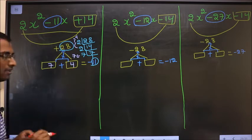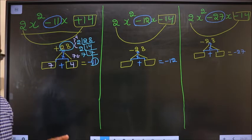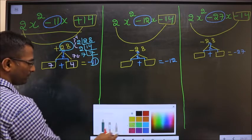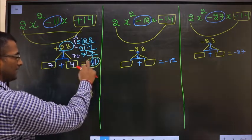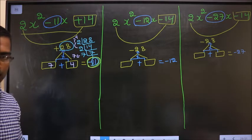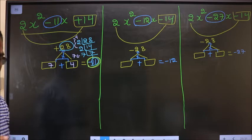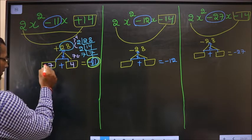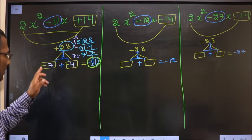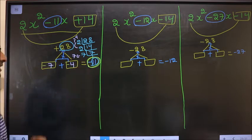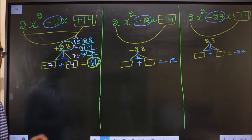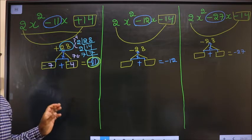Now adjust the signs for the first expression. We need the two numbers to sum to minus 11. That is only possible by placing a negative before both 7 and 4: minus 7 + minus 4 = minus 11, and minus 7 × minus 4 = plus 28. Signs are adjusted.